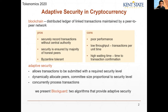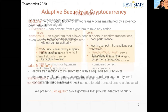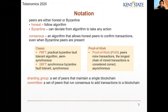We present BlockGuard, which offers a solution to adaptively choose the size of your consensus committee — which is the bottleneck for this — in order to alleviate this issue. Some notation: first, we consider Byzantine faults. Peers are either honest or Byzantine.